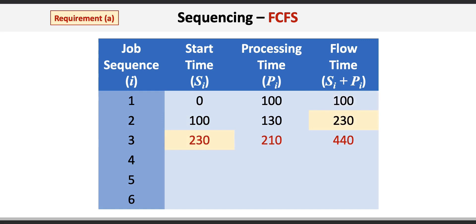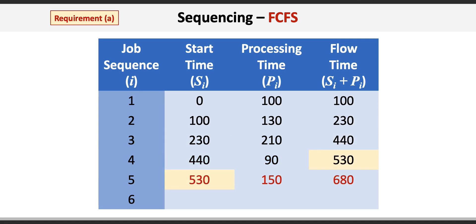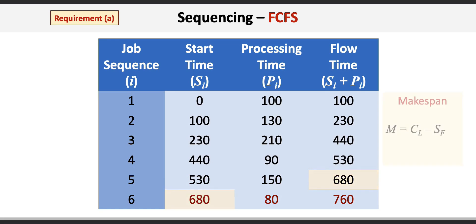Job 4 starts at 440 minutes and takes 90 minutes to process, resulting in a flow time of 530 minutes. Job 5 starts at 530 minutes, takes 150 minutes to process, resulting in a flow time of 680 minutes. Finally, job 6 starts at 680 minutes, takes 80 minutes to process, and results in a flow time of 760 minutes.